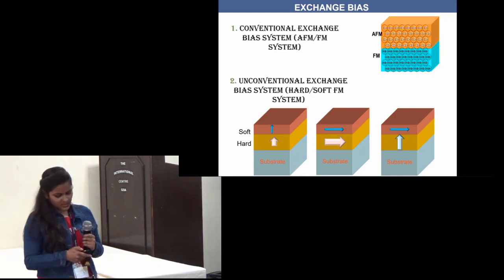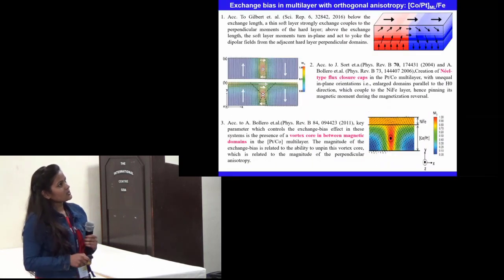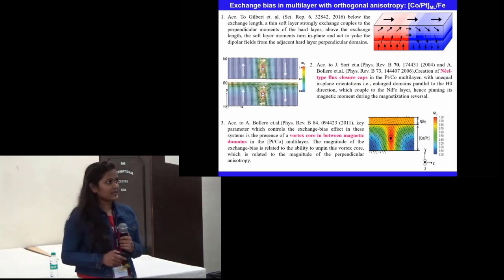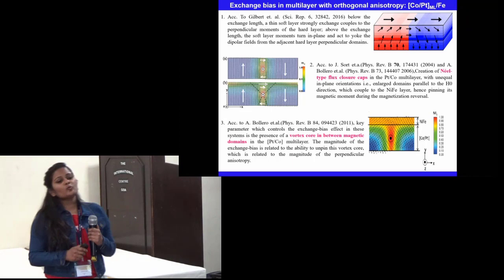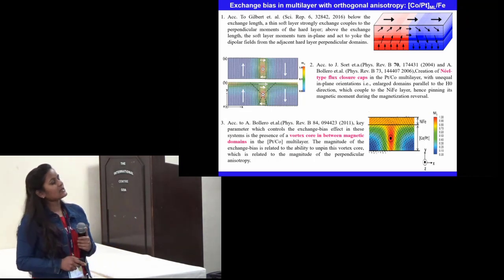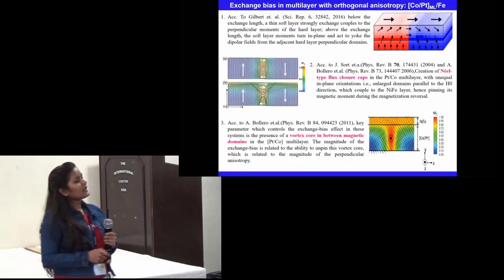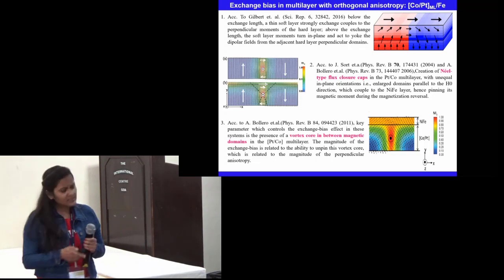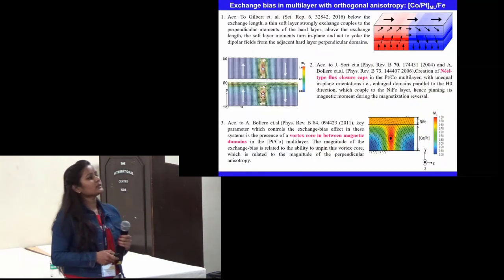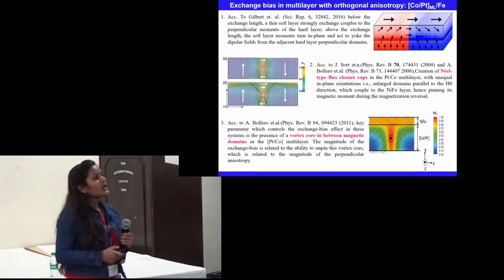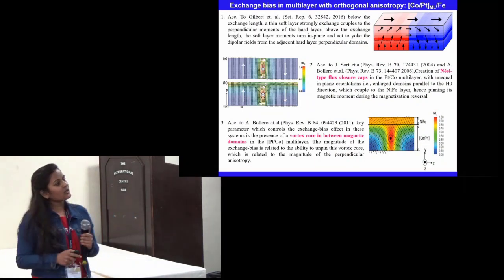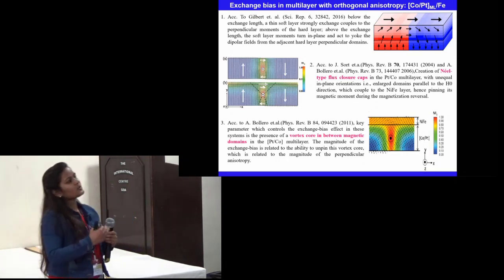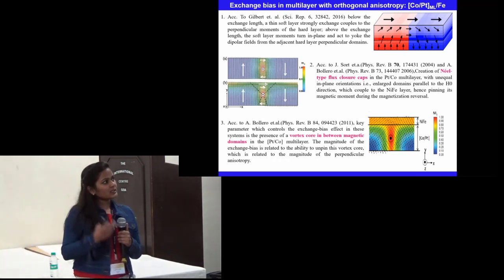The main motivation behind this study: it was shown in the literature that if we deposit a soft magnetic layer above a hard magnetic layer having perpendicular magnetic anisotropy, initially at lower thickness the moments are oriented perpendicular, whereas with increasing thickness the soft layer moments turn in-plane and appear to be yoking the perpendicular domains of the hard magnetic layer. Recently, some papers also showed that if we apply a strong in-plane magnetic field, an in-plane exchange bias can be induced in these films because of in-plane moments generated at the interface which pin the soft magnetic layer.